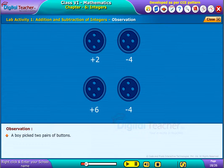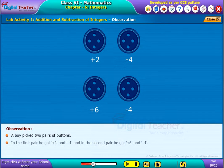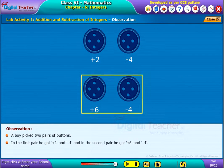A boy picked up 2 pairs of buttons. In the first pair he got plus 2 and minus 4 and in the second pair he got plus 6 and minus 4.